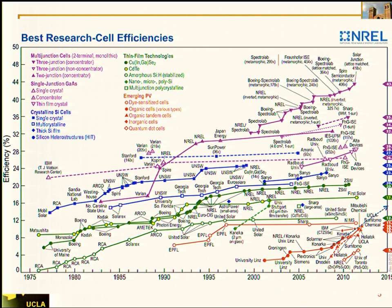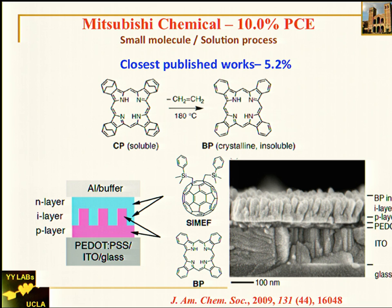This busy chart from NREL shows all the record-breaking efficiencies for triple-junction and single-junction solar cells — silicon, and on the bottom, the newcomers. Organic photovoltaics are represented by the red dots. If you look at the trend over the past several years, OPV is actually improving faster than the other groups. Following this prediction, by 2015 — about three years from now — we should be able to reach about 15% efficiency. We keep this chart in our lab to remind students that's their goal.